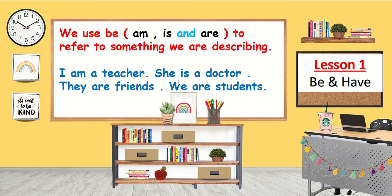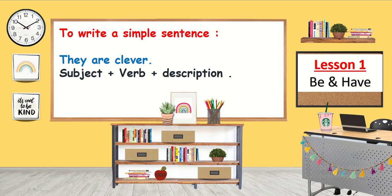She is a doctor. They are friends. We are students. To write a simple sentence, we write: subject, verb, and description. For example: they are clever.